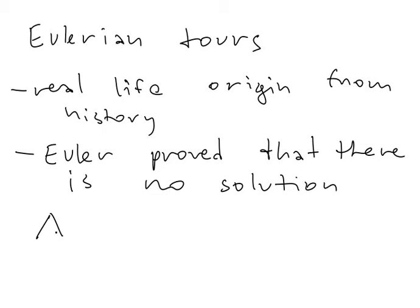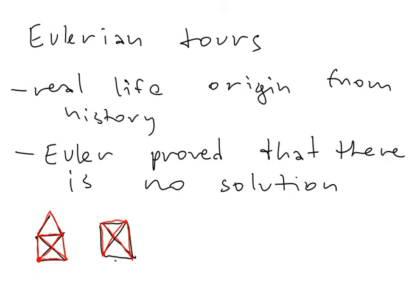Let me show you another example from real life. Everyone surely knows this — imagine a picture like this. The question is whether it is possible to draw it by one line, meaning you start at some point and draw it without putting your pen off the paper, with one consecutive stroke. You surely know that this is possible for this picture. On the other hand, if I have a picture like this, it is not possible — because if you start somewhere you never finish it. You can try as long as you want but you won't be able to finish this picture.